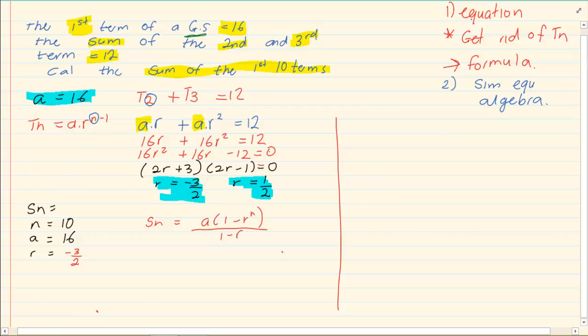Now we're using our formula and we are going to substitute our values. So we know that Sn is equal to a into one minus r to the power of n over one minus r. It is our geometric formula, geometric series formula.